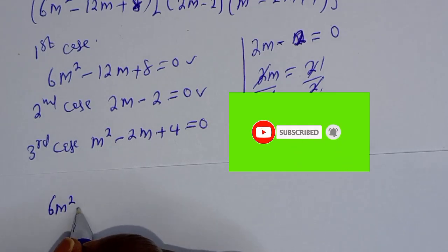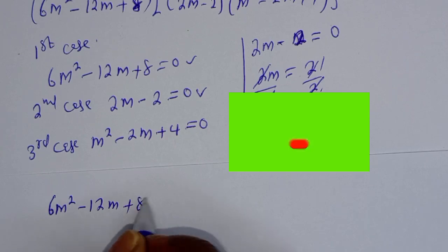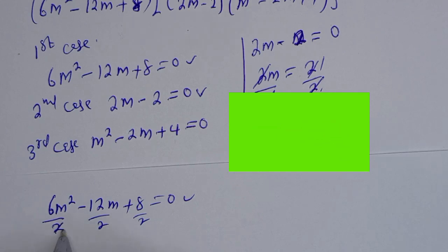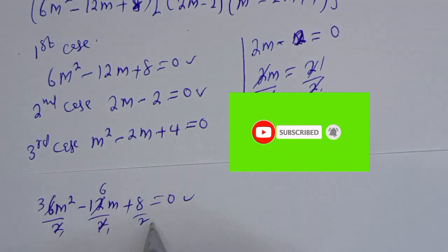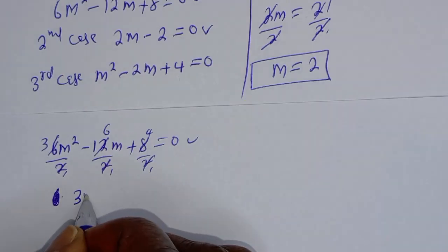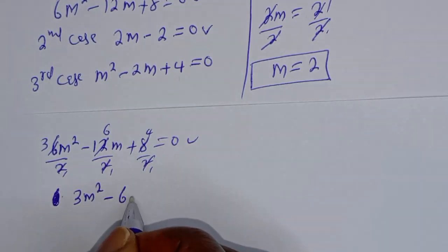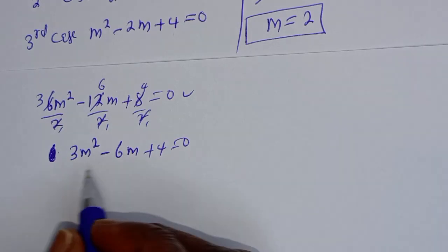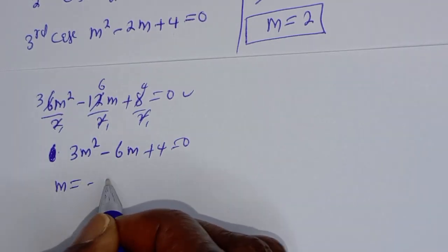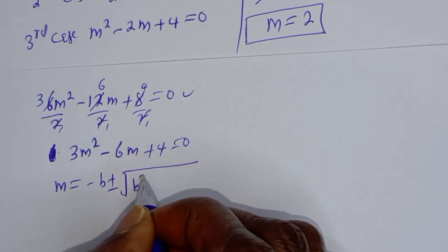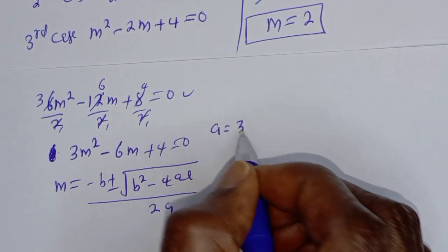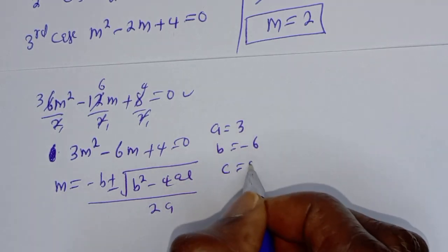For the first case: 6m squared minus 12m plus 8 equals 0. This is a quadratic equation. Dividing through by 2 gives 3m squared minus 6m plus 4 equals 0. Using the quadratic formula m equals minus b plus or minus square root of b squared minus 4ac, over 2a, where a equals 3, b equals minus 6, c equals 4.